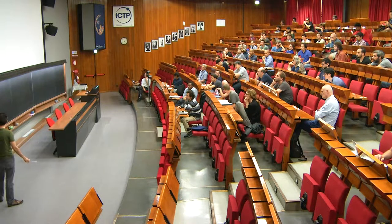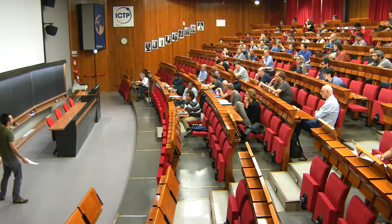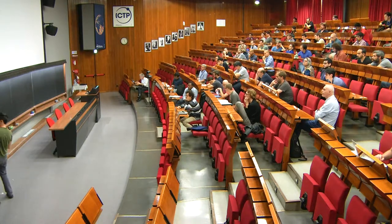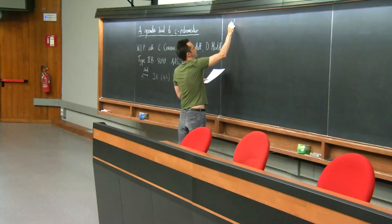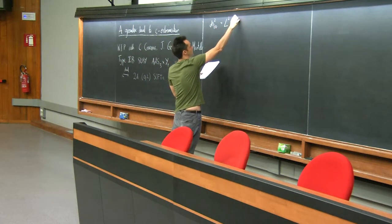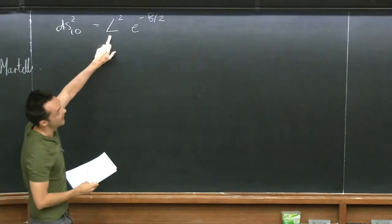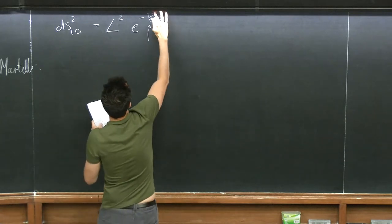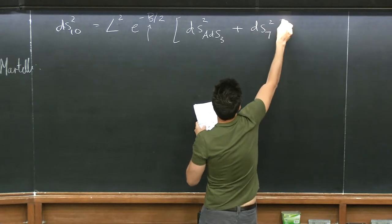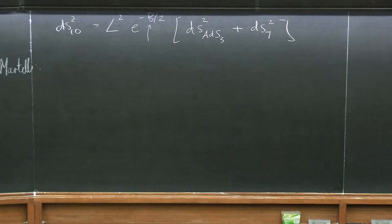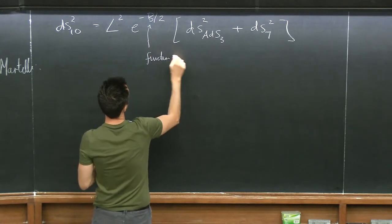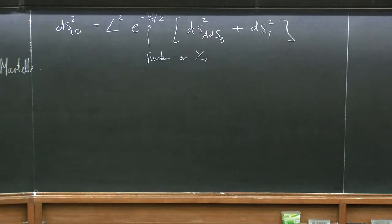For the sorts of theories I'll be discussing, they're D3-brane backgrounds — D3-branes wrapped on Riemann surfaces. On the gravity side, I've got a 10-dimensional metric that takes the form L² e^{−B/2} times the metric on ADS3 plus a metric ds²_7 on my 7-manifold Y7. Here B is a warp factor, which is a function on Y7. That's my ansatz or class of metrics.